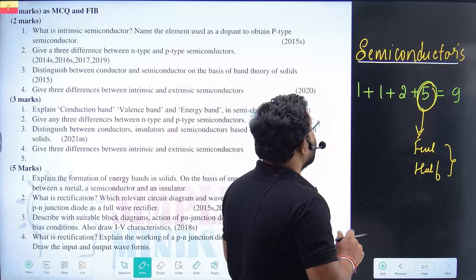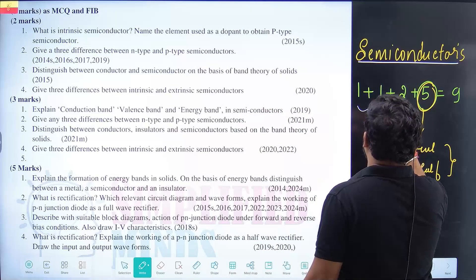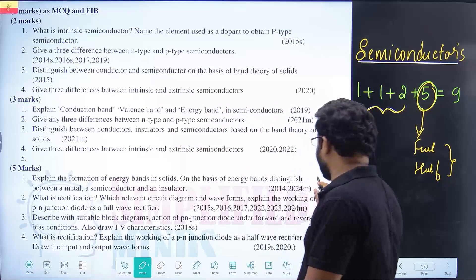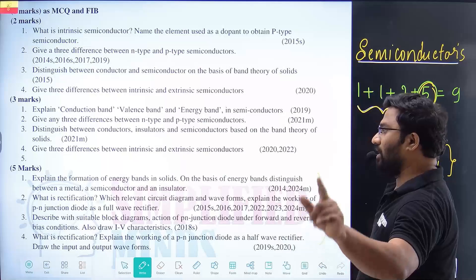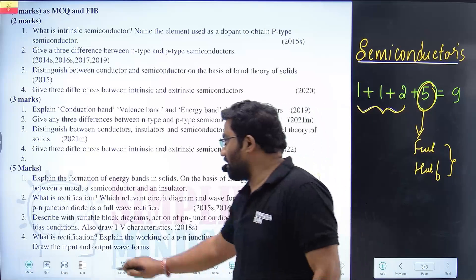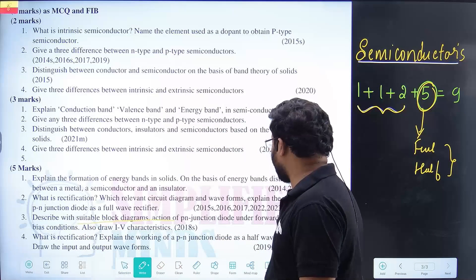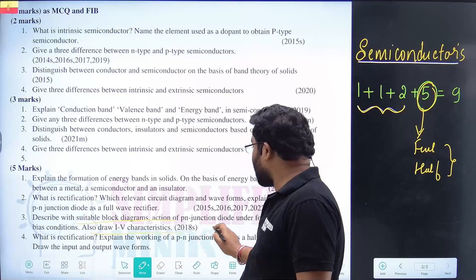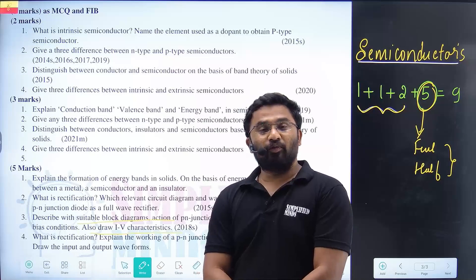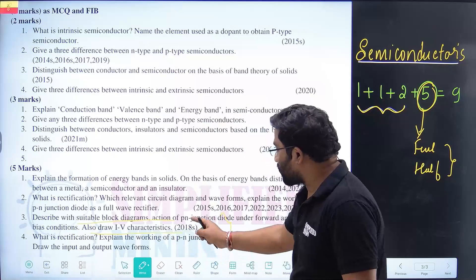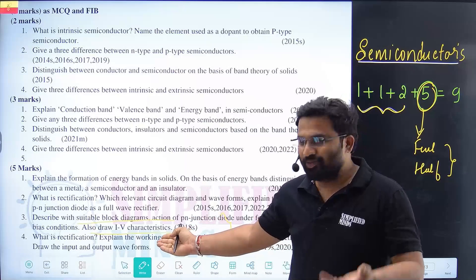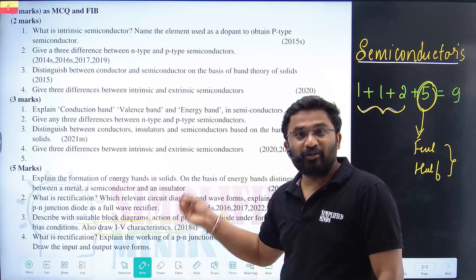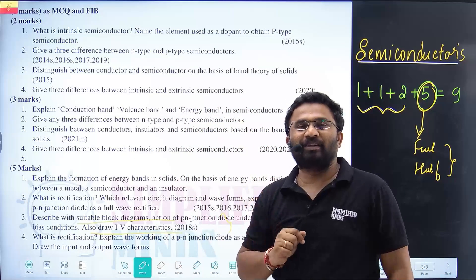That's why this is a five-marker, and two-markers and one-markers are straightforward. For five markers, there was one year they asked you to explain and describe the block diagram and action of a PN junction diode under forward bias and reverse bias, and also draw the IV characteristics. If you study full wave and half wave rectifier, forward bias topics are covered and are actually easier than other ones.